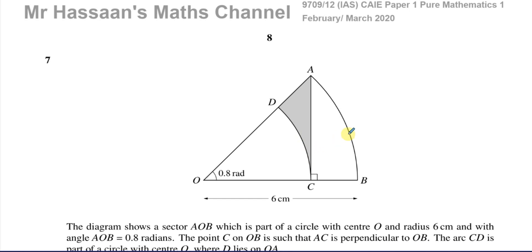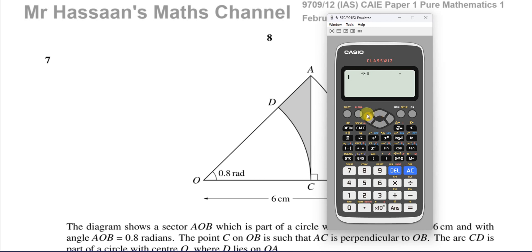Now here we have a question about radian measure and trigonometry. We're told that the diagram shows a sector AOB, which is a sector of a circle with center O and radius 6 centimeters and with angle AOB 0.8 radians. So we're now in radian mode. I'm going to make sure that I change my calculator to radian mode before I proceed. So now I'm in radian mode.